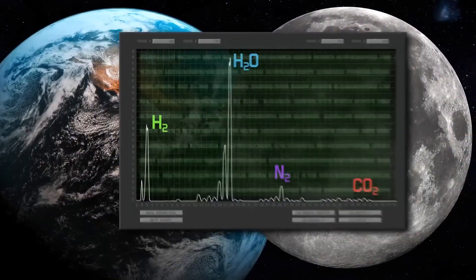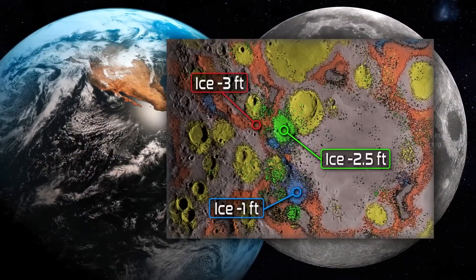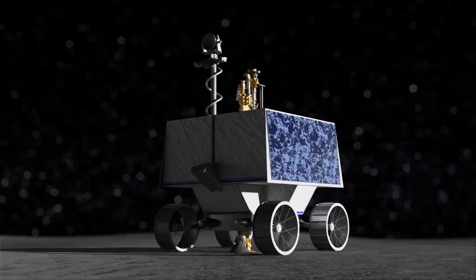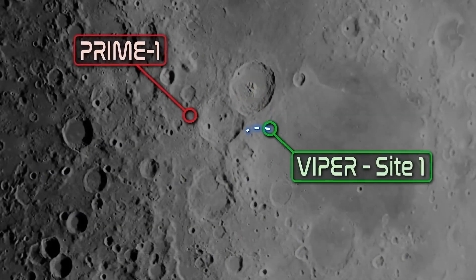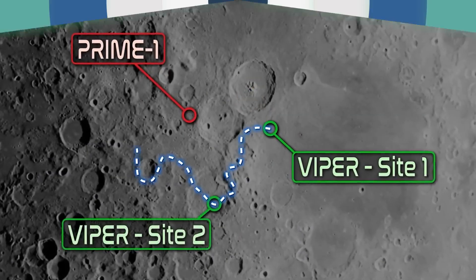The objective of PRIME 1 is to inform NASA's plans for mining resources on the lunar surface, as well as mission operations for a future NASA lunar rover mission called VIPER. So how will we extract water on the moon?